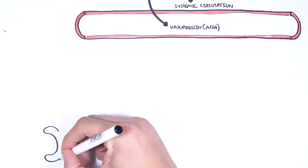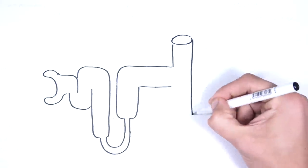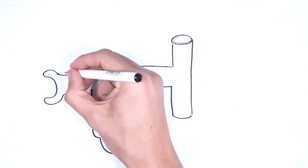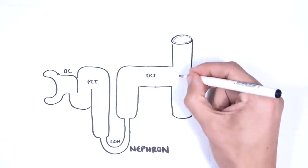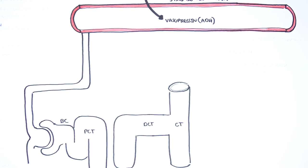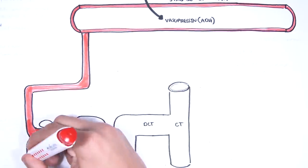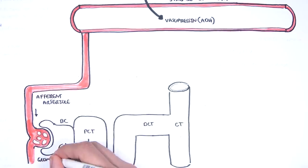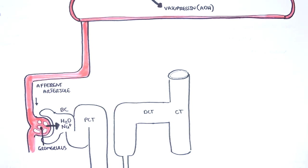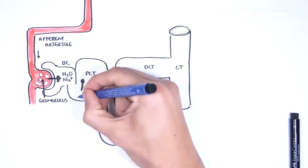Antidiuretic hormone targets the distal part of the nephrons to increase channels, which will result in water retention. The nephron is made up of the Bowman's capsule, the proximal convoluted tubules, the loop of Henle, the distal collecting tubules, and the collecting ducts. The afferent arteriole carries blood into the nephron, forming the glomerulus, which filters blood into the nephron. Water and sodium enter, for example.